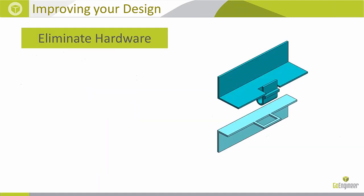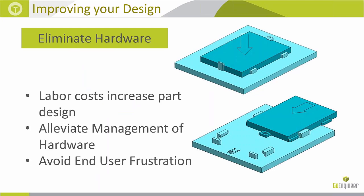Eliminating hardware is important because hardware introduces significant recurring labor costs with each assembly, whereas tooling is a one-time cost. You also avoid managing hardware like ziploc bags, staples, and instruction sheets. Integrating smart features into your plastic design can eliminate a lot of end-user frustration.